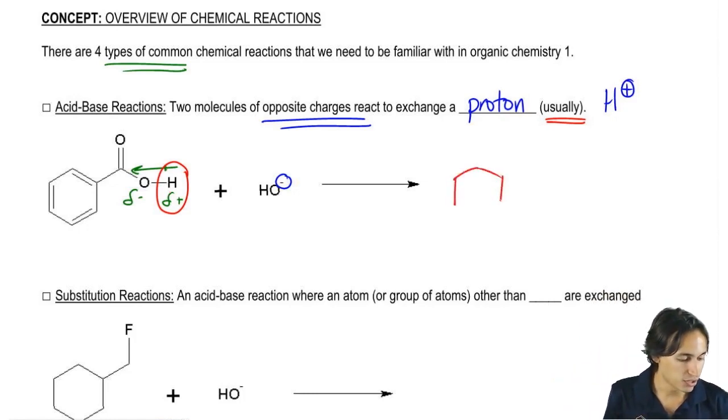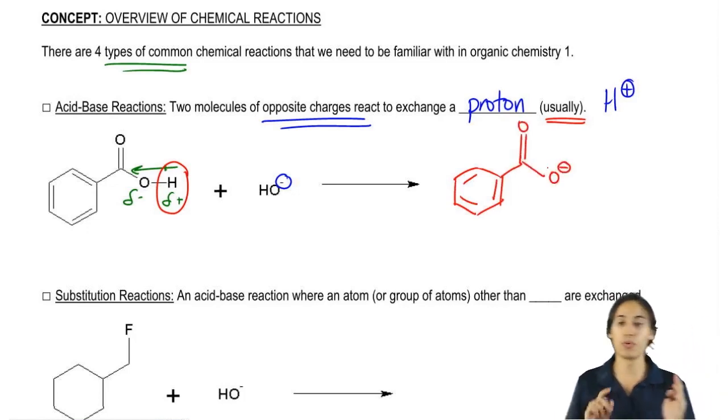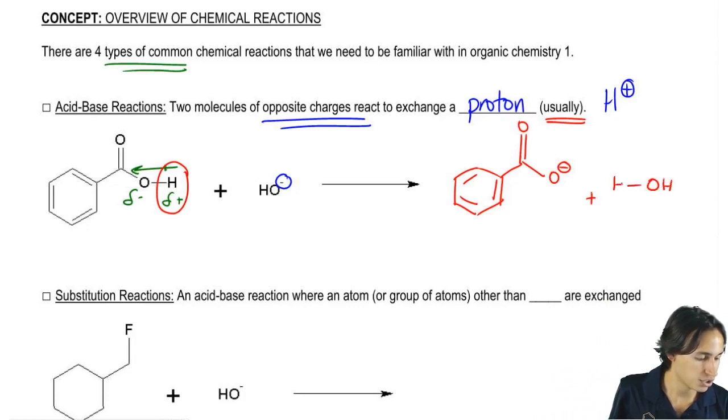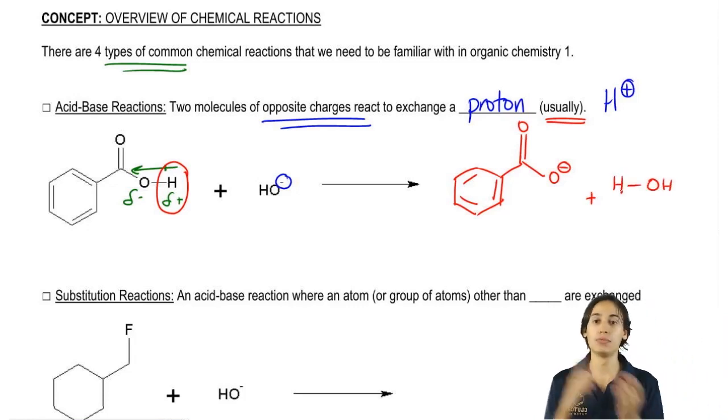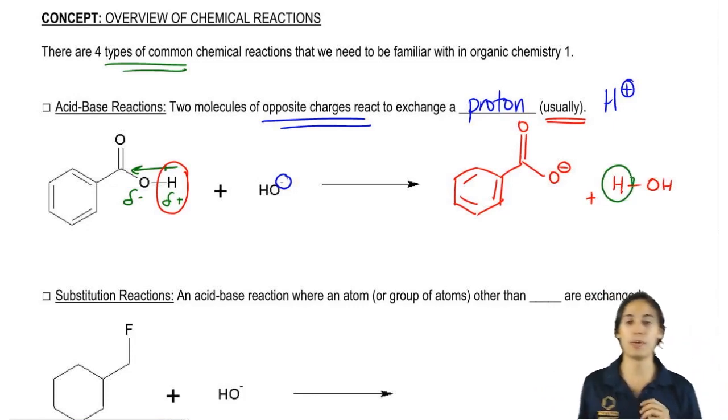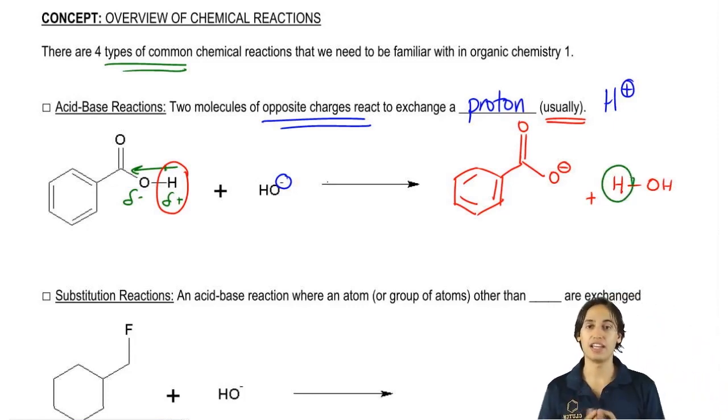is that I'm going to redraw this first compound and what I'm going to draw is that now this O gets a negative because before the other O had the negative. And now this OH over here is now attached to the H that came from the other compound.